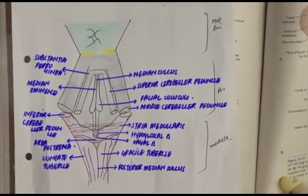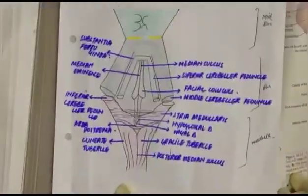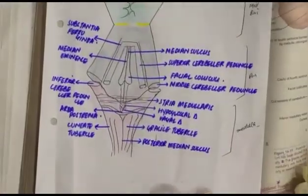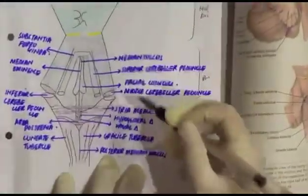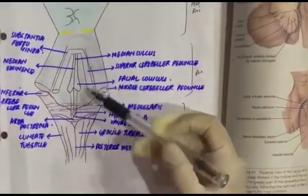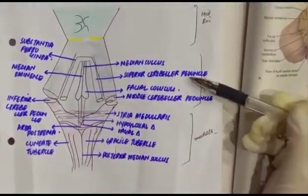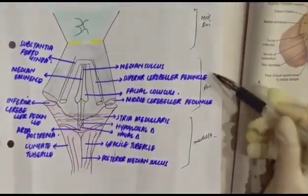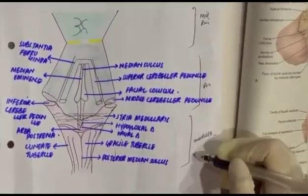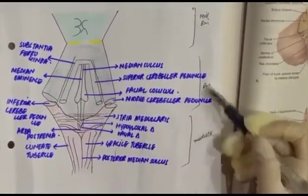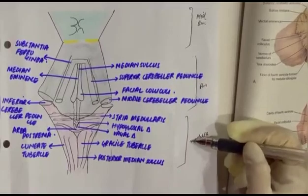The floor of the 4th ventricle is the most important part. You need to understand that it is diamond-shaped, and it is formed by the pons in the upper half — the whole of the pons and only the cranial or upper part of the medulla oblongata — as discussed in the location section.